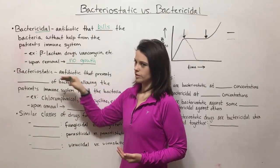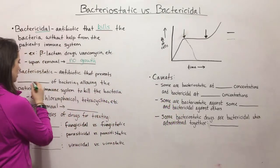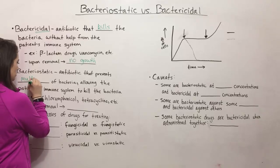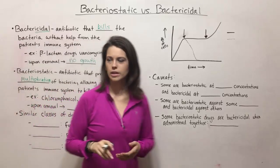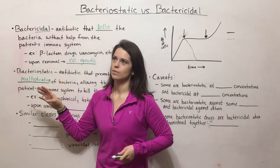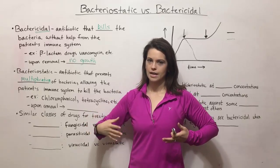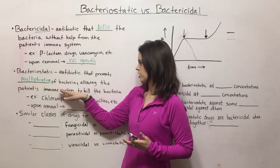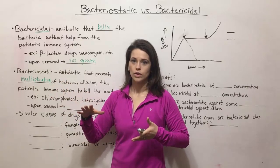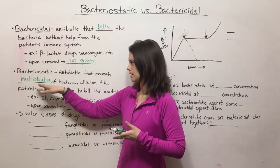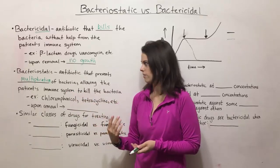Now we'll talk about bacteriostatic. This is where the antibiotic prevents the multiplication or the growth of the bacteria. The goal here is that bacteriostatic drugs prevent the bacteria from being able to multiply and divide and become more numerous. This allows the patient's immune system to kill the bacteria — bacteriostatic drugs just slow things down, depressing this multiplication process in order for the immune system to get ahead of the infection.